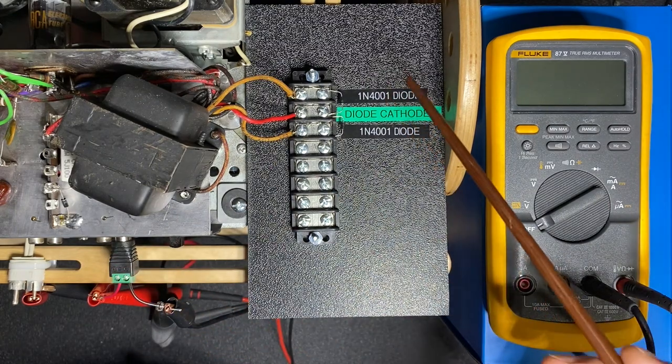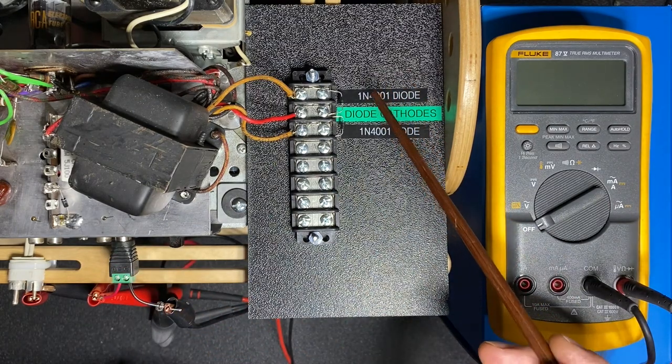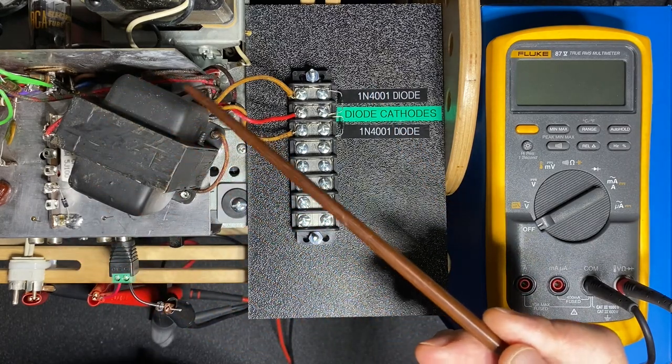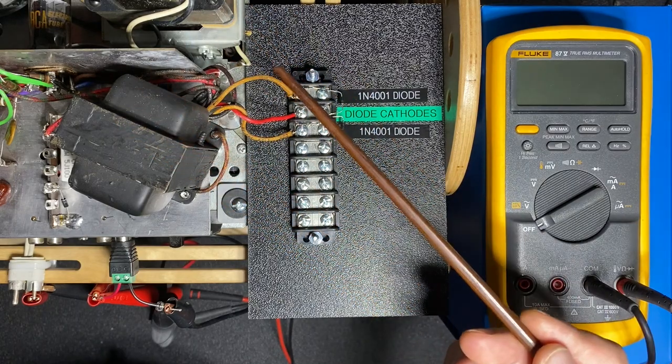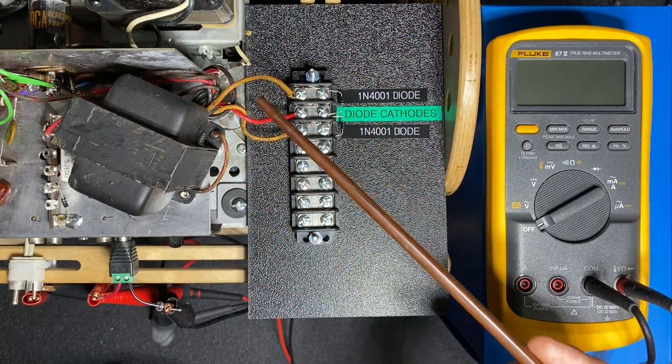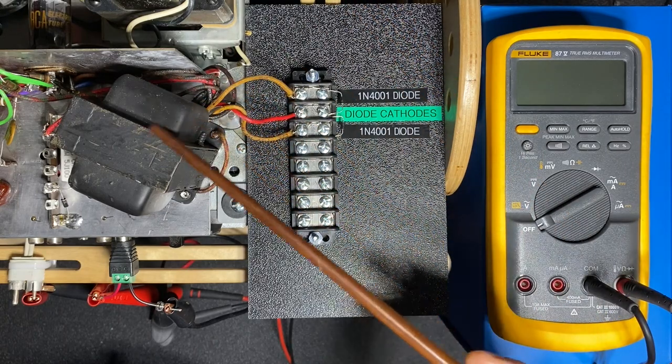Now remember our silicon diodes have a lower voltage drop than our selenium rectifier so voltage here now is likely to be higher. Let's power up the player to 120 volts and see where we're at and then we can determine if we need a dropping resistor to lower the voltage to 12.7 volts.